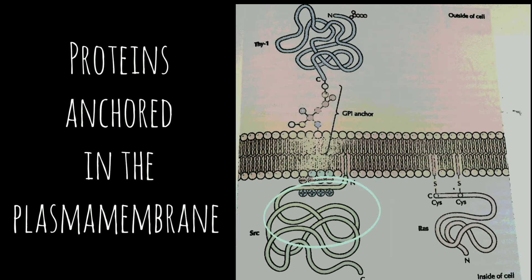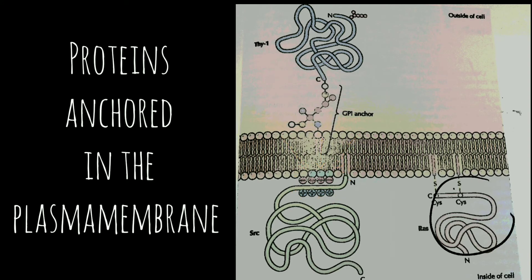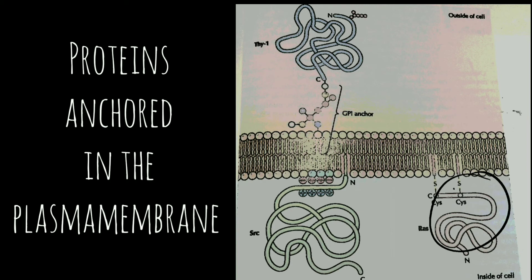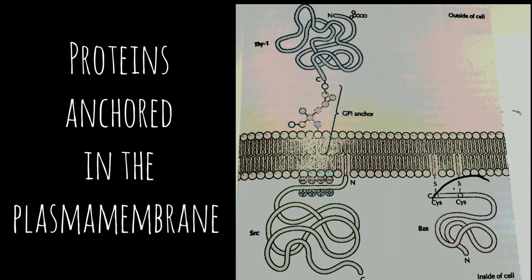The SRC protein is anchored by a myristoyl group attached to its amino terminus. A positively charged region of SRC also plays a role in membrane association, perhaps interacting with the negatively charged head groups of phosphatidylserine. The RAS protein is anchored by a farnesyl group attached to the side chain of a C-terminal cysteine. It is noted that many of the proteins anchored in the inner leaflet of the plasma membrane play important roles in the transmission of signals from cell surface receptors to intracellular targets.